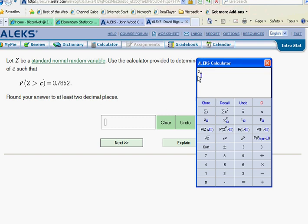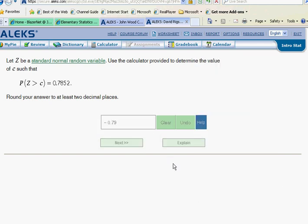And that should tell us our unknown z-score to two decimal places, negative 0.79. Let's check it. And Alex is happy.